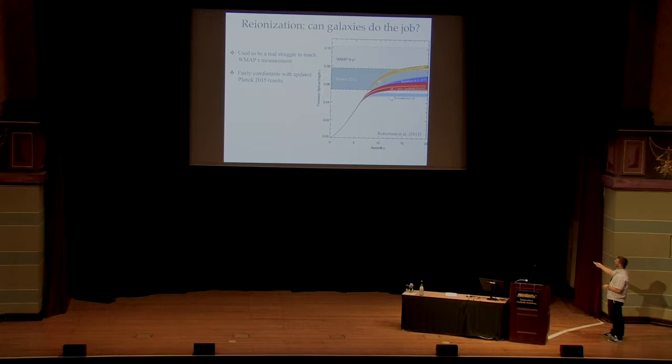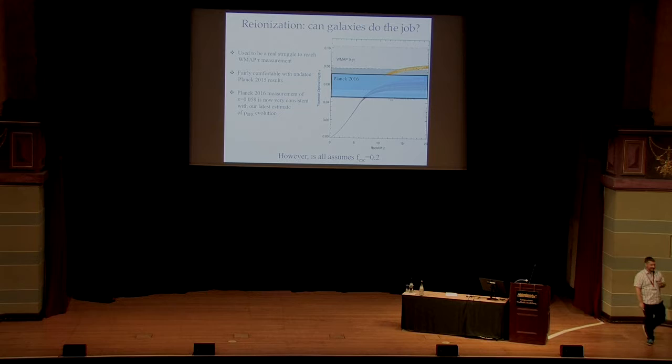And then again, this year, tau's come down again. And now basically, we sit right in the middle of this. So things look very comfortable from one perspective. We've got plenty of galaxies to do the job. However, when looking at diagrams like this, it's always good to be aware of what assumptions go into these predictions. And we're assuming here the escape fraction is 20% at high redshift. So if you think that's a scarily high number, then it's maybe not that straightforward.